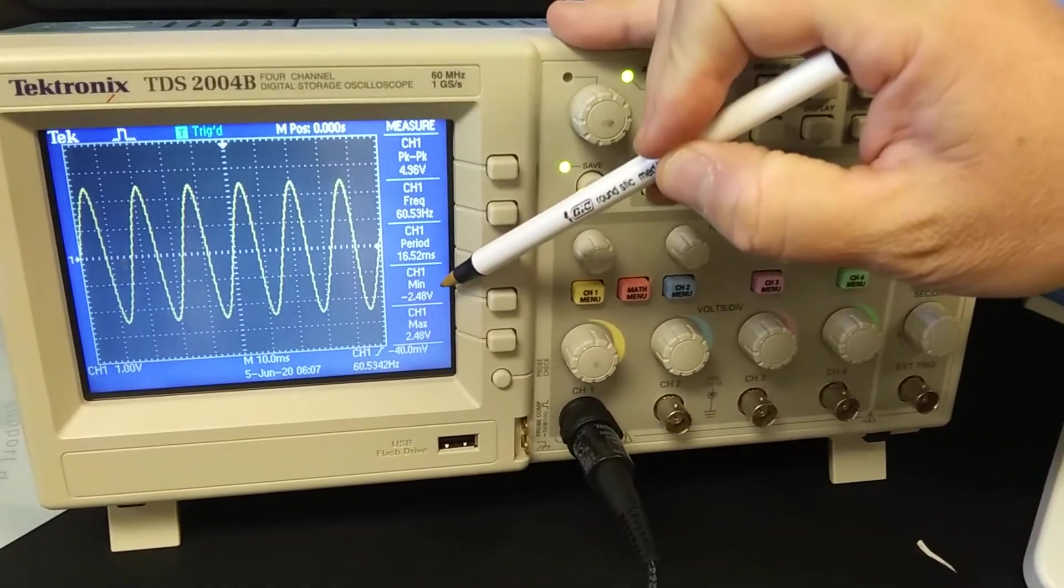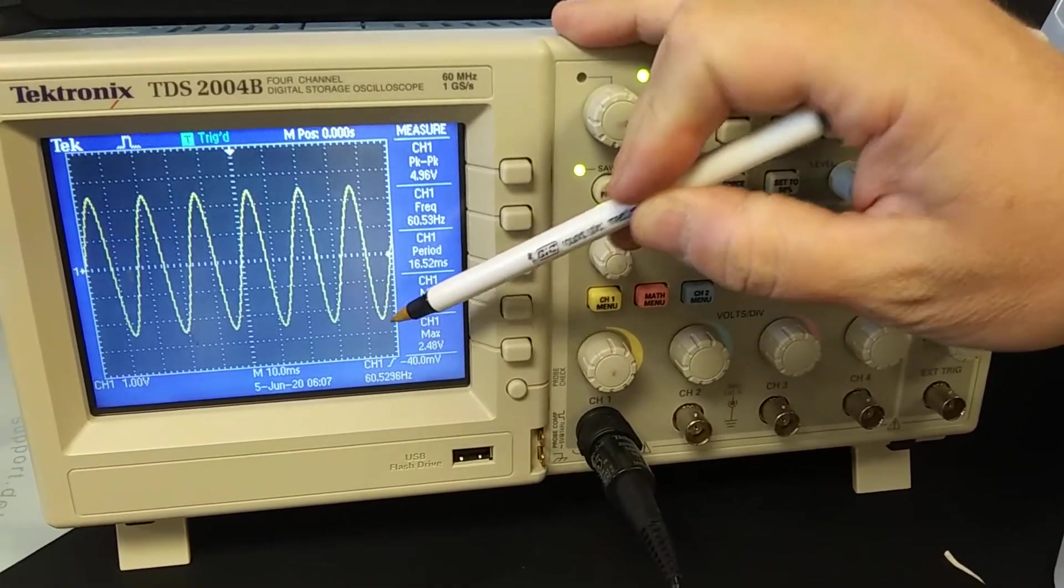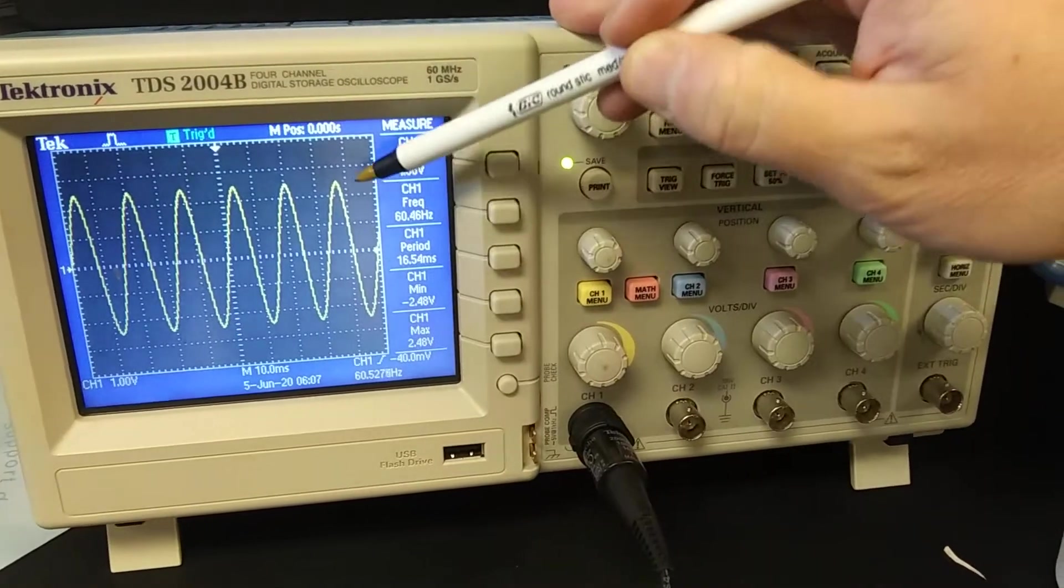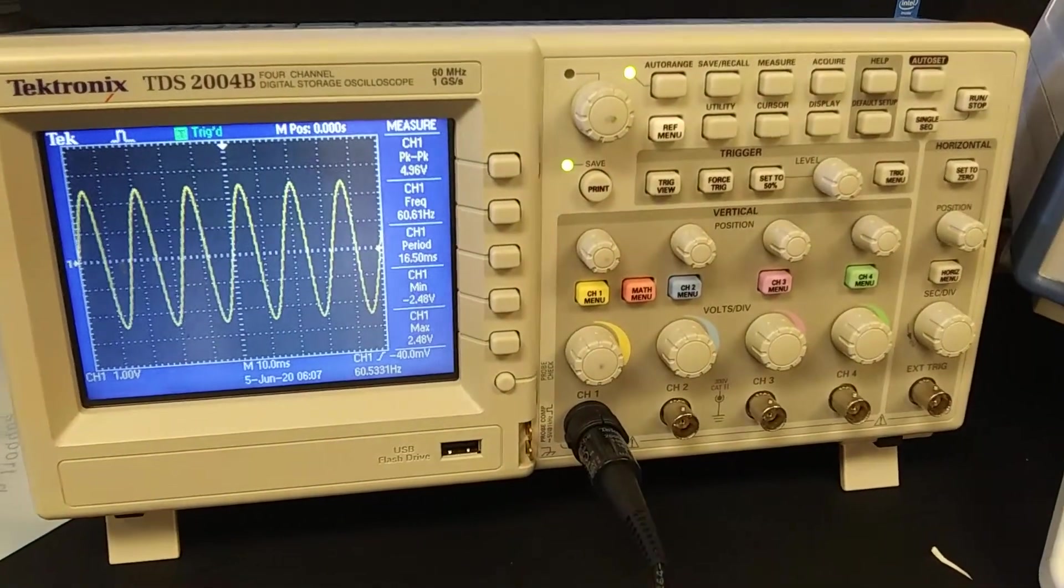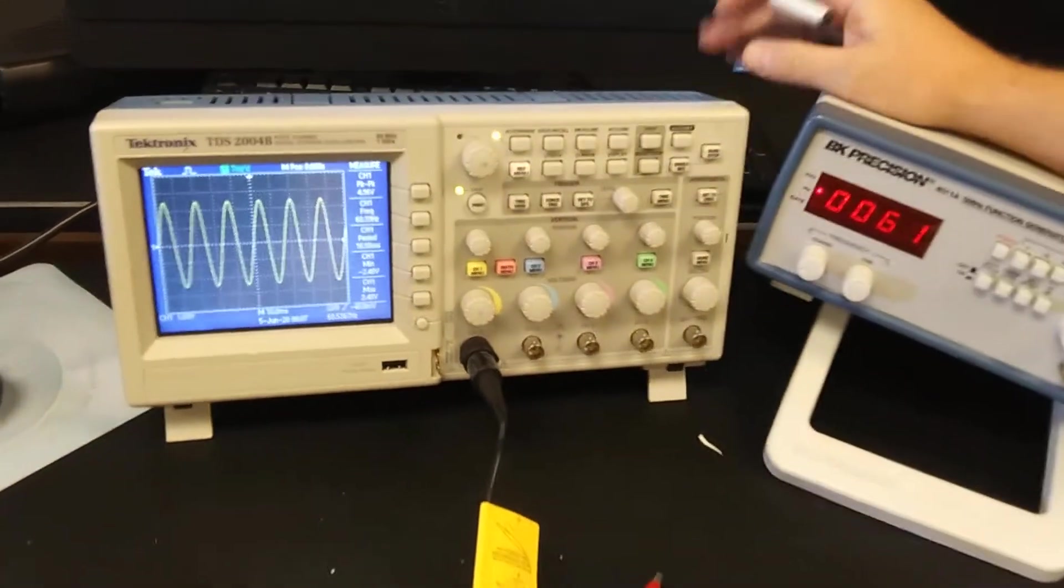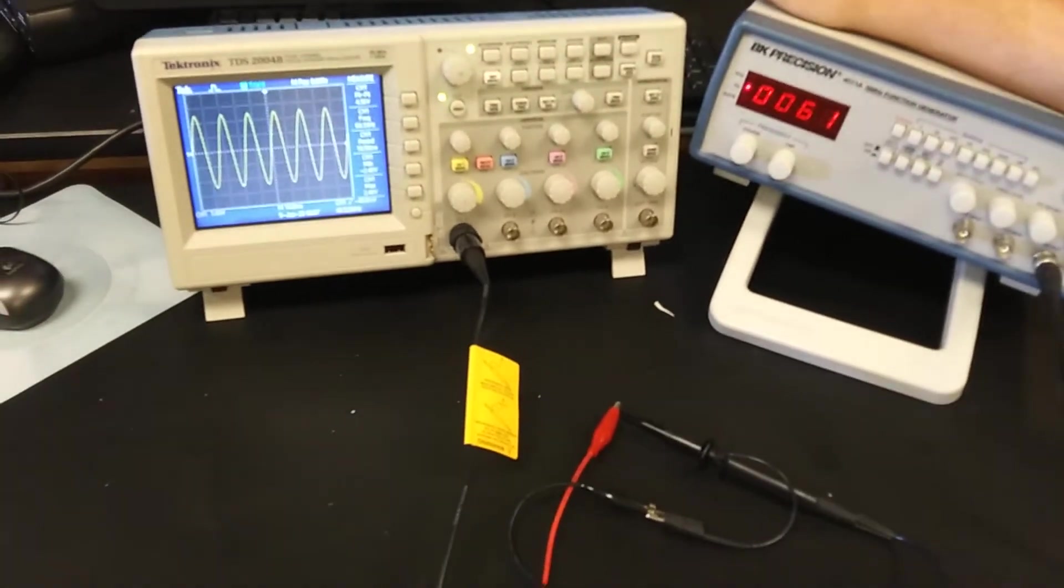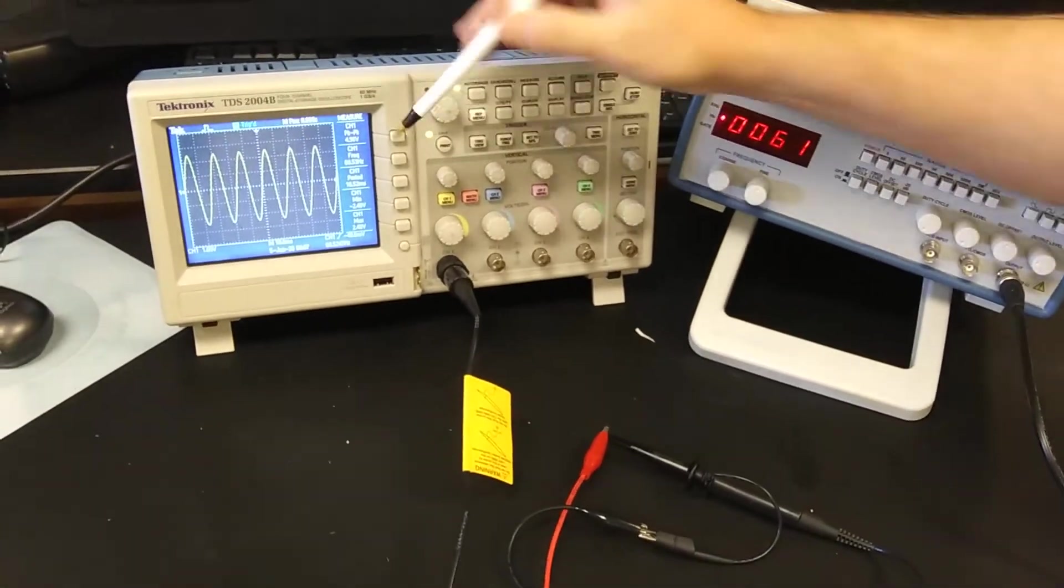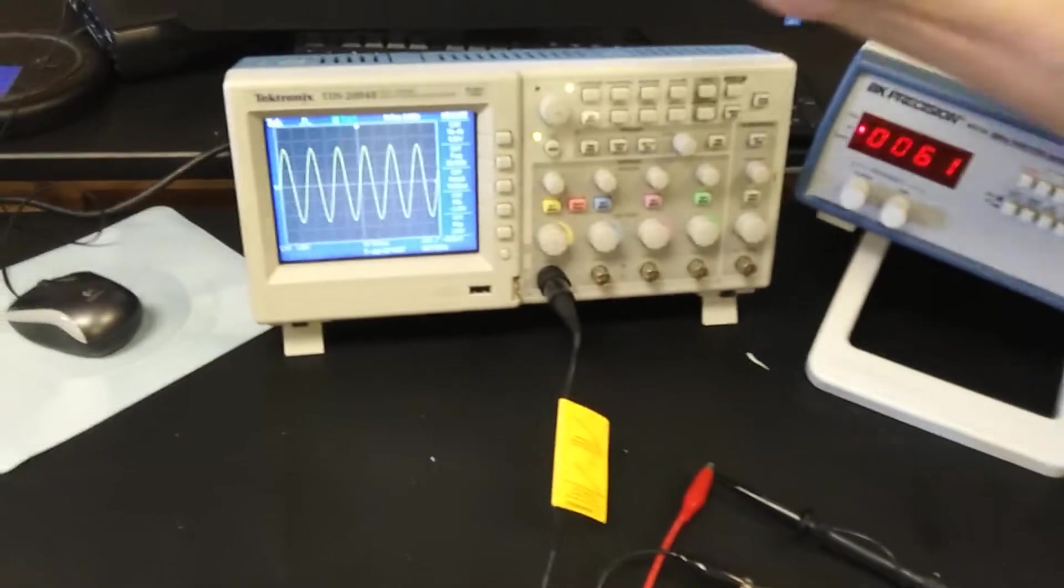Notice the minimum voltage is about negative 2.5 and the maximum voltage is about positive 2.5. This is very different than our power supply that was going on and off from 0 volts to 2 volts. So let's look at how we can make this more like that power supply first.